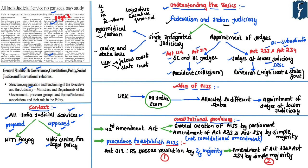Coming to the idea of the All India Judicial Service: the AIJS essentially means that a nodal agency such as the UPSC would conduct an All India Judicial Service examination. Based upon the results of such an examination, the successful candidates would be allocated to the different states and appointed as judges at the lower judiciary — meaning they could be appointed as district judges or judges at the subordinate courts. In a way, the All India Judicial Service is similar to other All India Services such as the IAS or the IPS. Once we create an AIJS, the state governments would have no role in the appointment of judges at the lower judiciary.